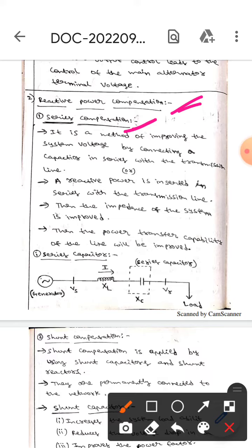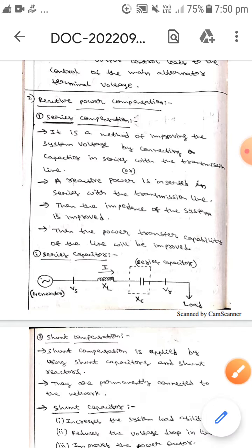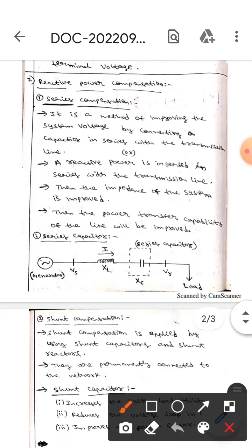Here the first one is series compensation. It is a method to improve the system voltage by connecting a capacitor in series with a transmission line, or we can say that reactive power is connected in series with a transmission line. When the impedance of the system is improved, then the power transfer stability of the line will also be improved.